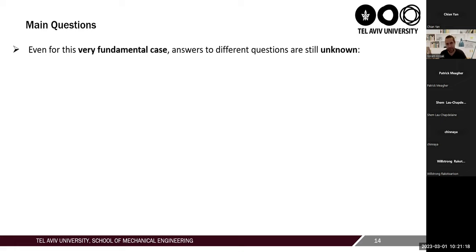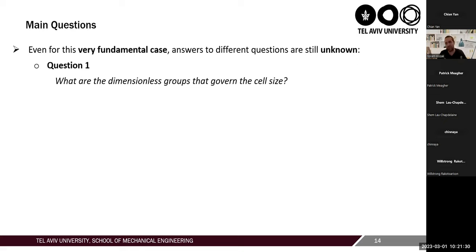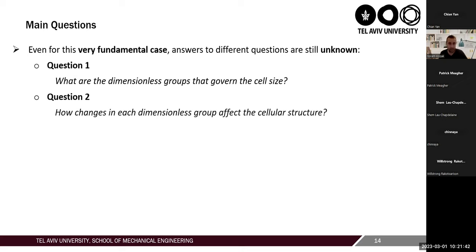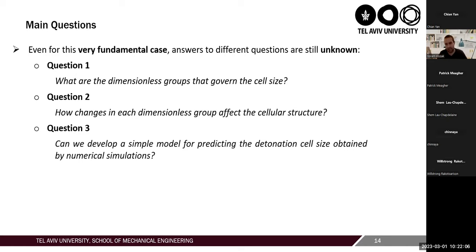Even this very fundamental case raises questions that no one knows the answer to. The first question is: what are the dimensionless groups that govern the cell size? Even for this simple case, it's not clear. There are correlations that suggest various groups, but can you prove what dimensionless groups govern the cell size? The second question is: how do changes in each dimensionless group affect the cell structure? Can we make this quantitative? And finally: can we develop a simple model that can predict the dimensionless cell size obtained by numerical simulation — so instead of running all these expensive simulations, can we create a simple model that will predict what the simulation gives us?